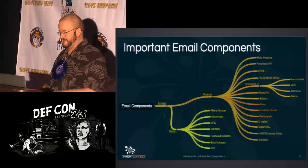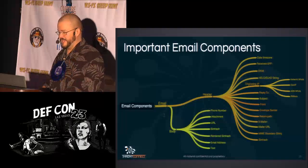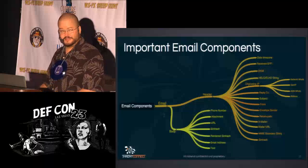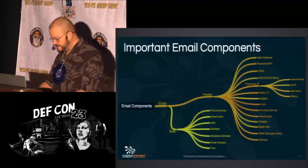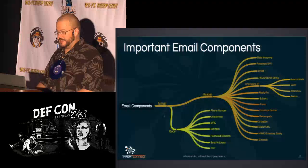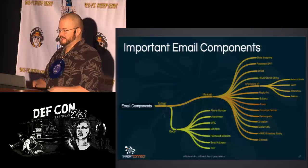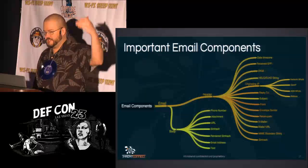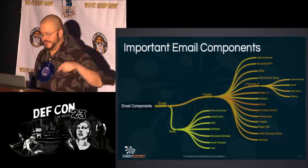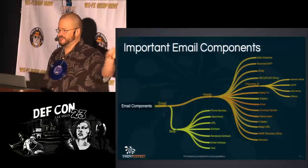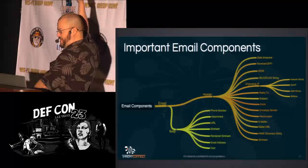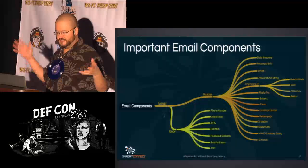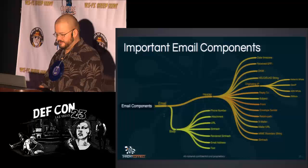One header field missing from my mind map is 'received' — it was so obvious I forgot to include it, but someone in the workshop pointed it out. The Python script I use catches all header fields, converting the entire header — including X-prefixed custom fields — into key-value pairs in JSON. You can have as many X-blah-blahs as you want in a header, and the script converts the whole thing.